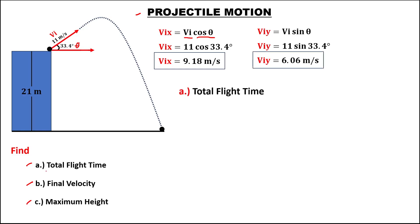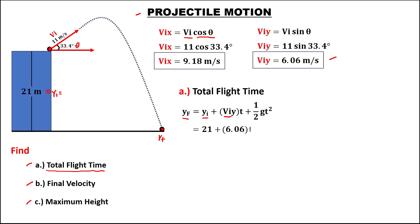Now, to find the total flight time, using this formula: the final y equals the initial y. The initial y is the starting point. To substitute all the values, the initial y is 21 meters, plus the initial velocity for y, that's 6.06, times the time, plus 0.5 times gravity, which is negative 9.8, times the time squared. The final y equals 0, because the object is on the ground.